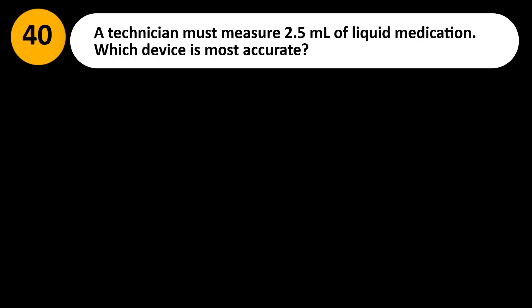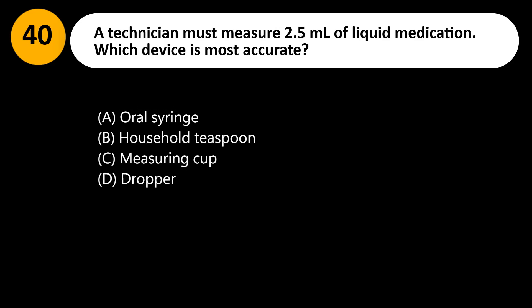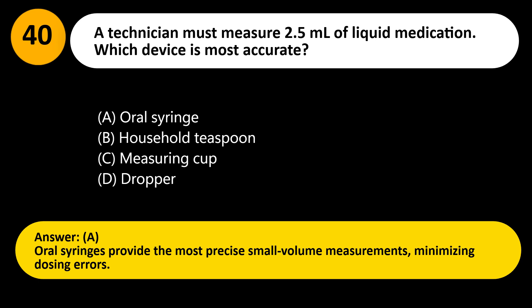A technician must measure 2.5 ml of liquid medication. Which device is most accurate? A. Oral syringe. B. Household teaspoon. C. Measuring cup. D. Dropper. Answer: A. Oral syringes provide the most precise small volume measurements, minimizing dosing errors.